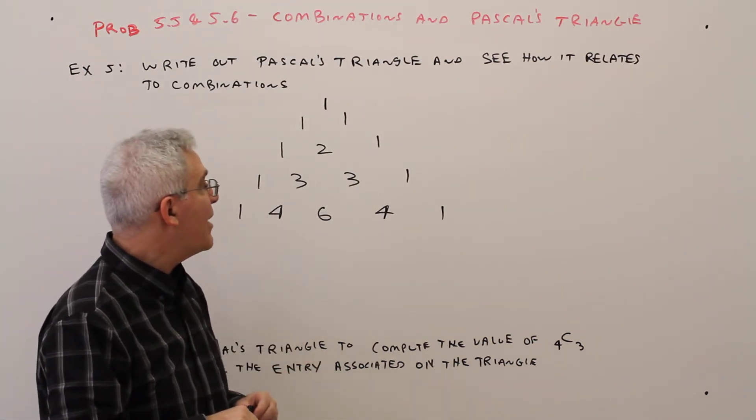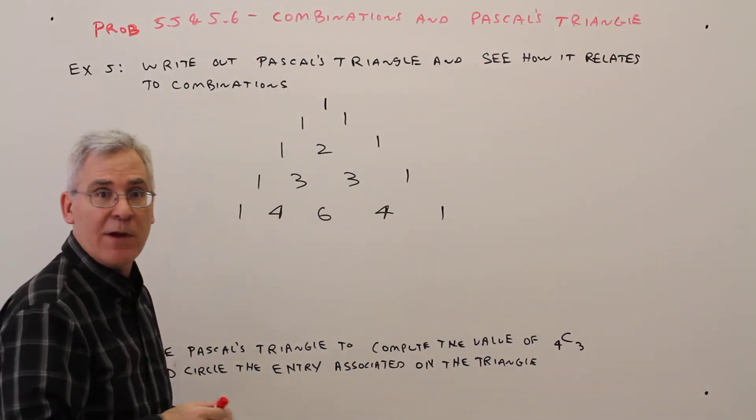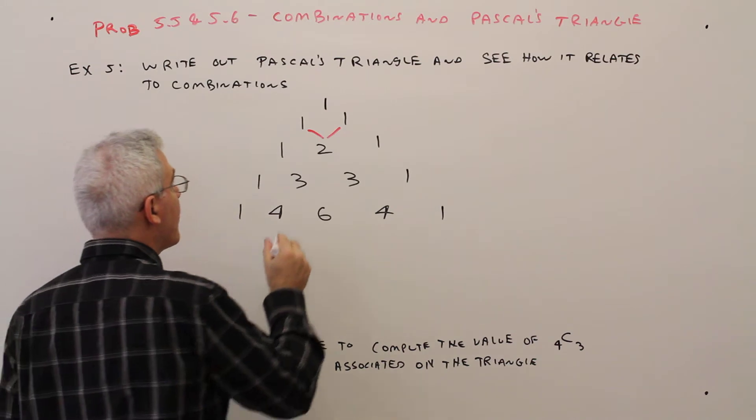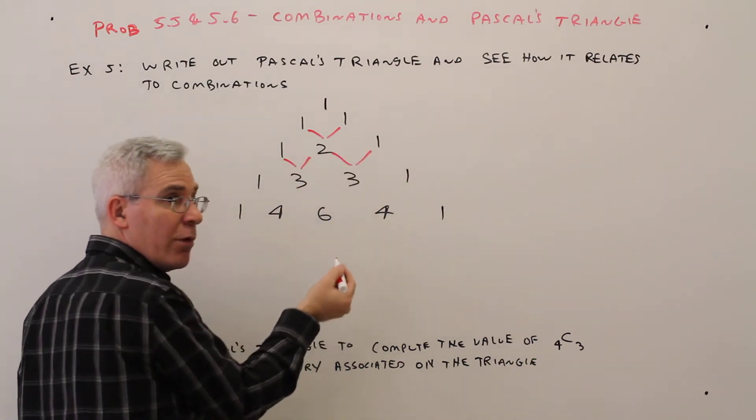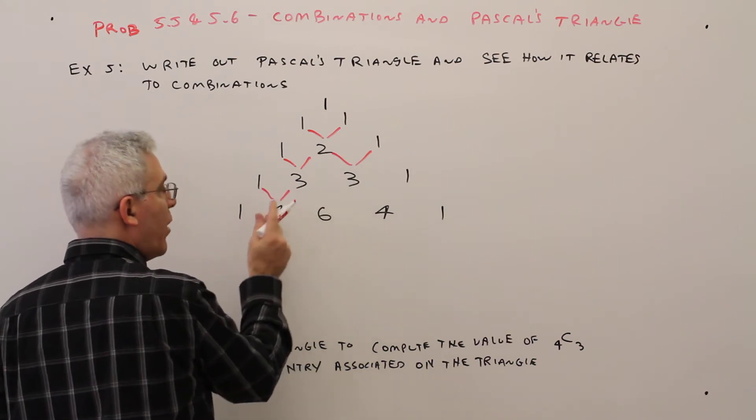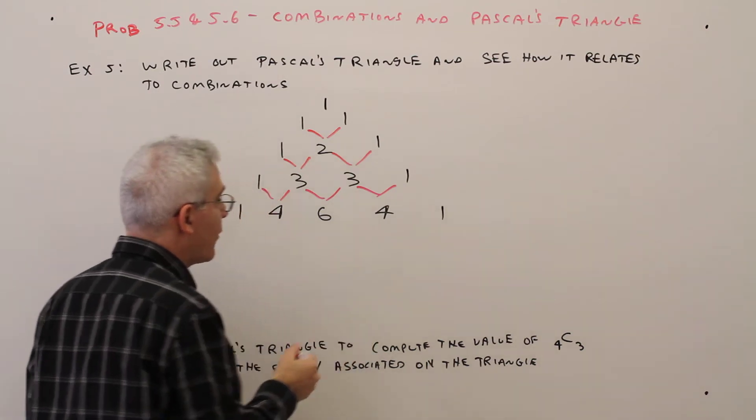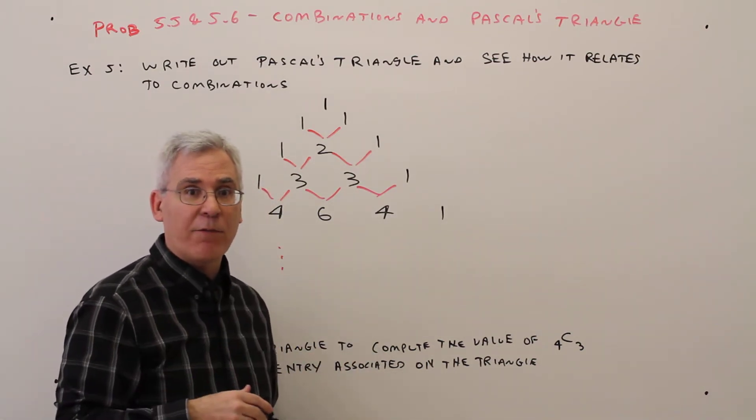If you've never seen Pascal's Triangle, perhaps you could see the pattern. If not, I'll show you. 1 plus 1 makes 2. 1 plus 2 makes 3. 2 plus 1 makes 3. 1 plus 3 makes 4. 3 plus 3 makes 6. 3 plus 1 makes 4. And the triangle continues indefinitely.